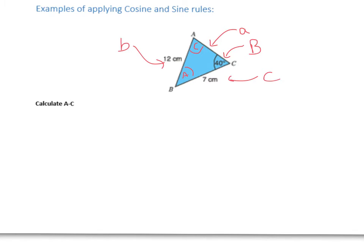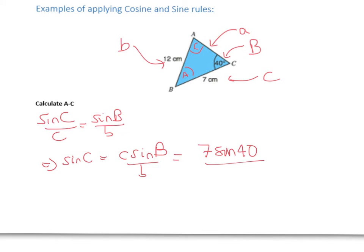First, we know that sine C over c equals sine B over b - that's the sine rule. In this question, we know what c is, we know what b is, and we know what capital B is. We've got all the ingredients we need. So sine C equals c sine B over b. That's going to be 7 times sine 40, all over 12.